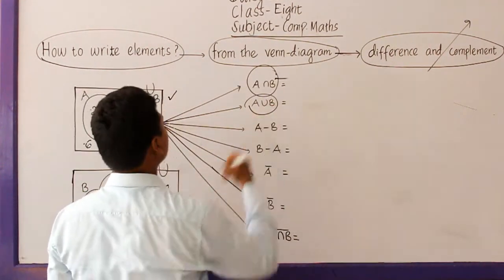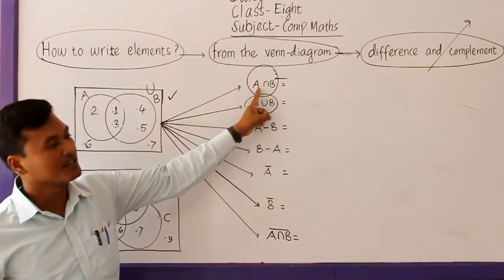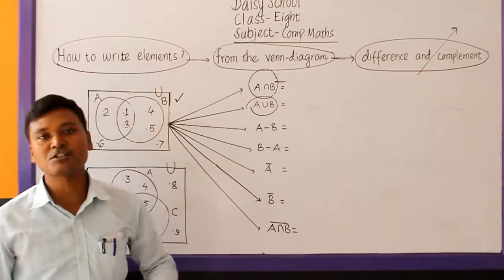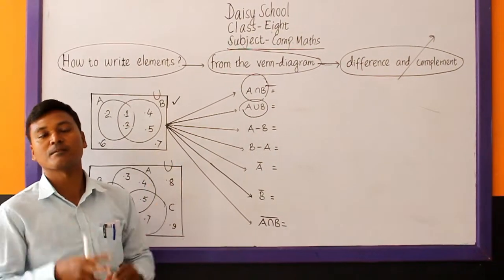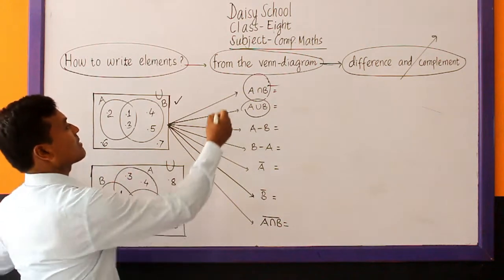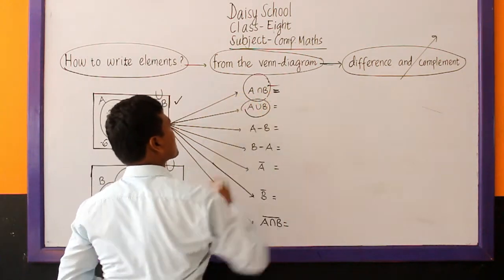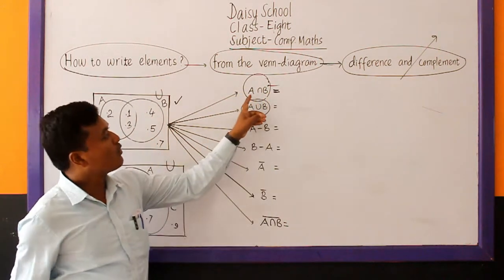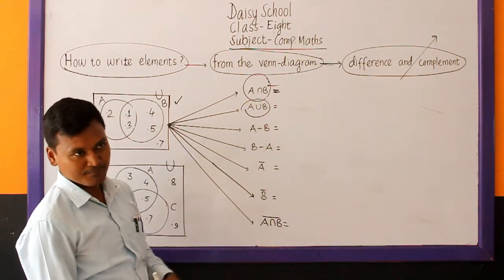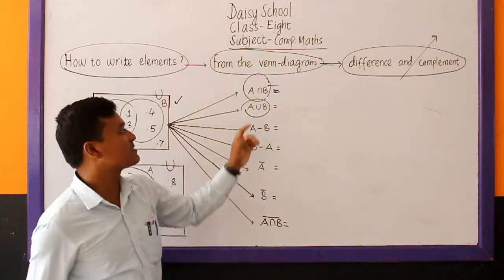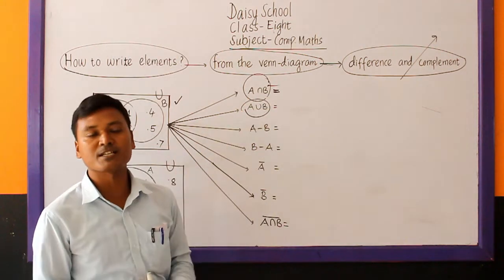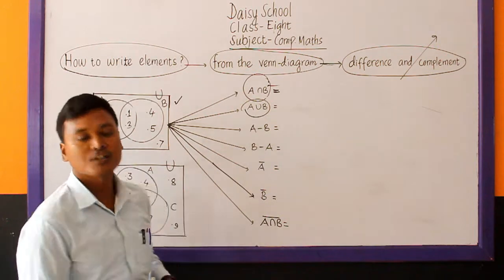But directly from the given Venn diagram — if the question is, find A intersection B from the given Venn diagram, you can write the elements directly by studying the given Venn diagram. So let us write the elements of A intersection B. As we know, while finding intersection, we just write common elements of A and B. While writing elements of A intersection B, we write common elements of A and B directly from the given Venn diagram.